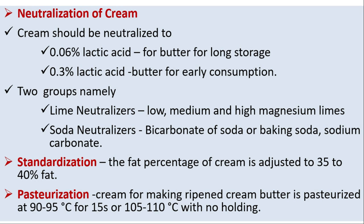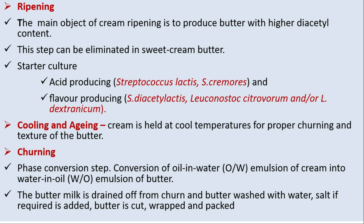Standardization: the fat percentage of cream is adjusted to 35–40%. Pasteurization: cream for making ripened cream butter is pasteurized at 90–95°C for 15 seconds, or 105–110°C with no holding. Ripening: the main object of cream ripening is to produce butter with higher diacetyl content; this step can be eliminated in sweet cream butter. Starter cultures include acid-producing cultures (Streptococcus lactis and Streptococcus cremoris) and flavor-producing ones (Streptococcus diacetylactis, Leuconostoc citrovorum, and Leuconostoc dextranicum).